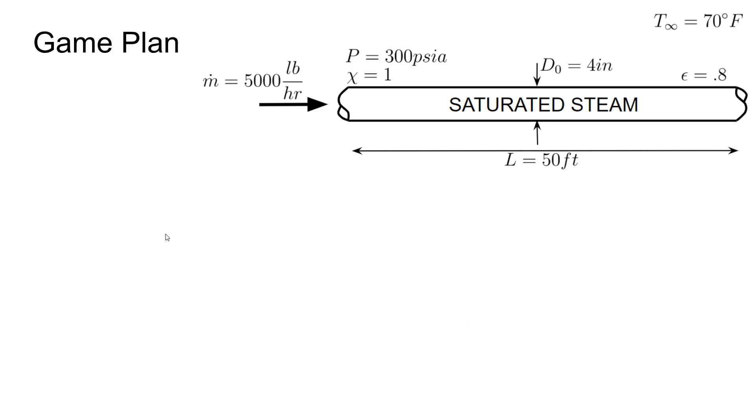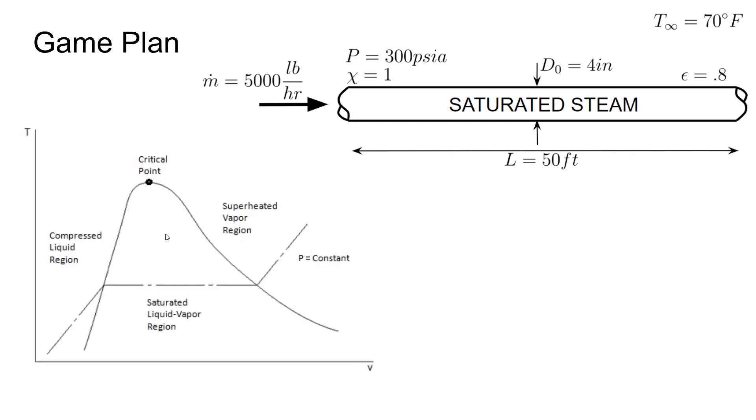Since this problem is fairly involved, let's make sure we have a clear game plan before we dive too deep into the details so we don't get lost. Here's our sketch of the pipe again, and I want to remind you about what's actually happening to the steam on the vapor dome as shown on a temperature volume diagram. As you can see, we have three regions. The liquid region to the left, the saturated region in the middle, and the superheated region on the right.